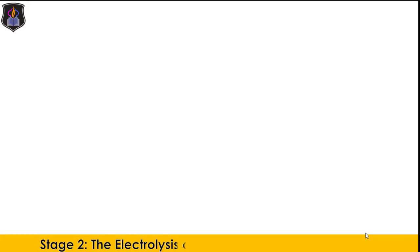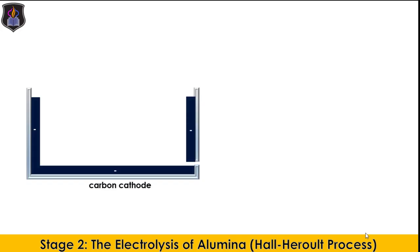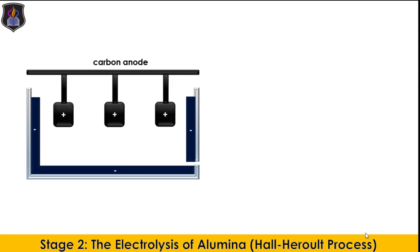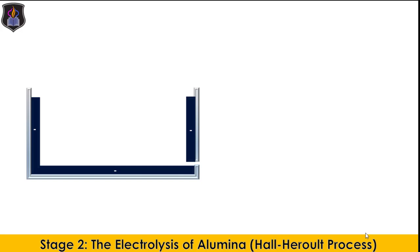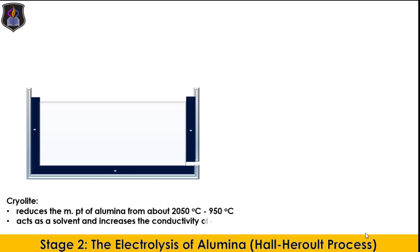The next stage is the electrolysis of alumina, called the Hall-Héroult process. The Hall-Héroult cell is made up of a steel tank lined with carbon acting as the cathode, and large blocks of carbon hung in the middle of the tank act as the anode. The electrolyte is a mixture of molten alumina and cryolite. The cryolite is added to reduce the melting point of alumina to about 950 degrees Celsius, making the process economically viable. It also acts as a solvent and increases the conductivity of the electrolyte.